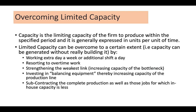When capacity is limited, it can be overcome by: working an extra day a week or an additional shift a day, resorting to overtime work, strengthening the weakest link by increasing the capacity of the bottleneck, investing in balancing equipment to increase the capacity of the production line, and subcontracting as a way of increasing capacity.